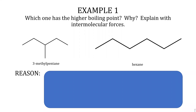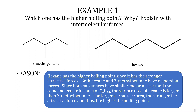Example one: which one has the higher boiling point and why? The substances are 3-methylpentane and hexane. Hexane has the higher boiling point since it has the stronger attractive forces. Both hexane and 3-methylpentane have London dispersion forces and the same molecular formula C6H14. However, the surface area of hexane is larger than 3-methylpentane — the larger the surface area, the stronger the attractive force, and thus the higher the boiling point.